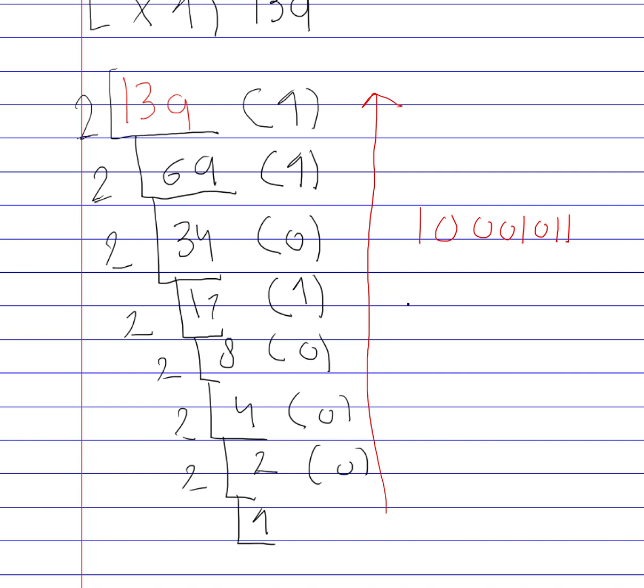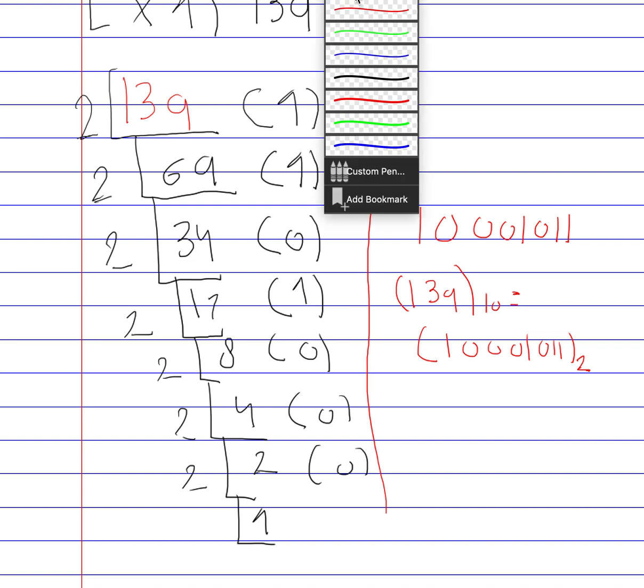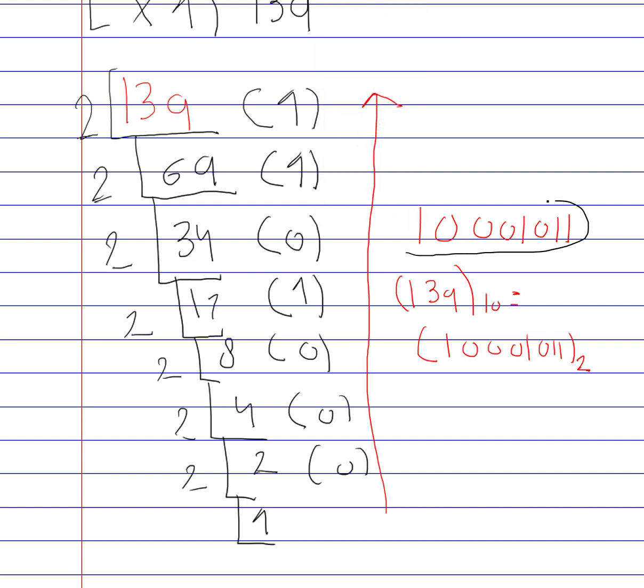The correct representation of writing this is 139 base 10, and then you would express this number as a base 10, and then you would equal it as 10001011, and then putting a 2 here indicating that this is a base 2. So this right here, I'm going to go ahead and circle it, this right here is sufficient. This is 139 as a decimal expressed into a binary.